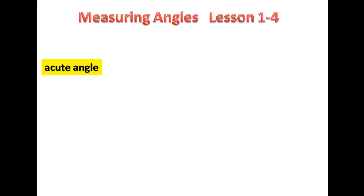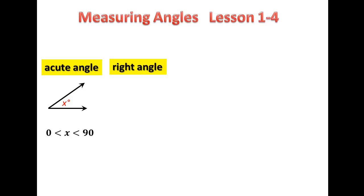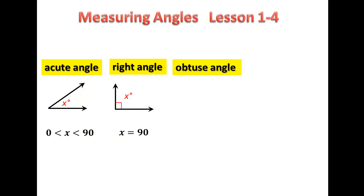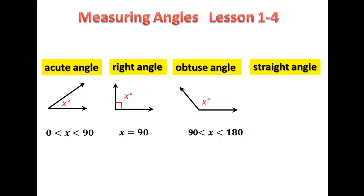Now let's talk about classifying angles. An acute angle is just like it sounds — it's a cute little angle, meaning it's in between zero and 90 degrees. A right angle is always 90 degrees; take note of this symbol, which means we are talking about a right angle. An obtuse angle — obtuse means very large — so an obtuse angle is in between 90 degrees and 180 degrees. And a straight angle is just a straight line, always 180 degrees.